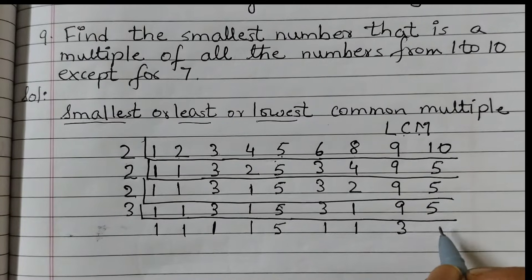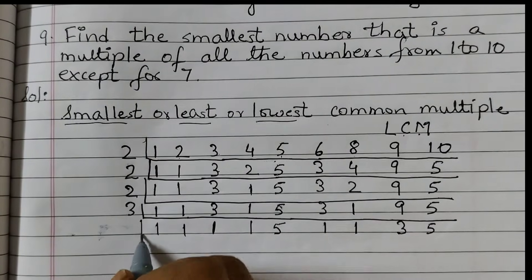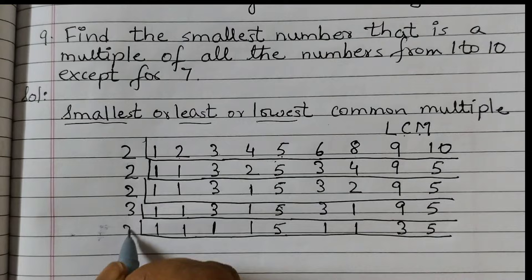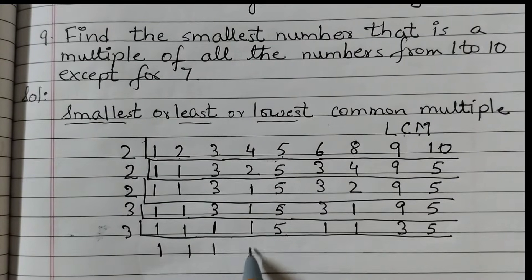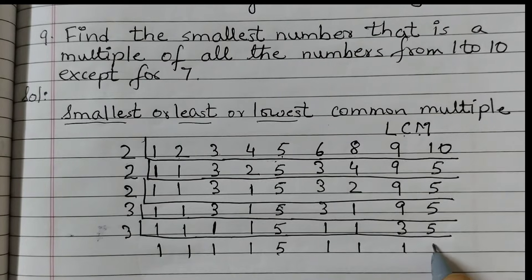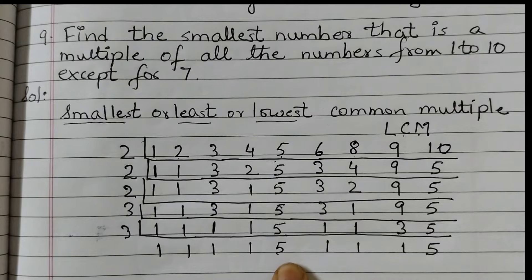5 is not a multiple of 3. Now 1 more 3 is here so we will divide again by 3: 1, 1, 1, 3, 1, 1, 3, 5. Now we have got all ones except for 5, so now we will divide by 5.